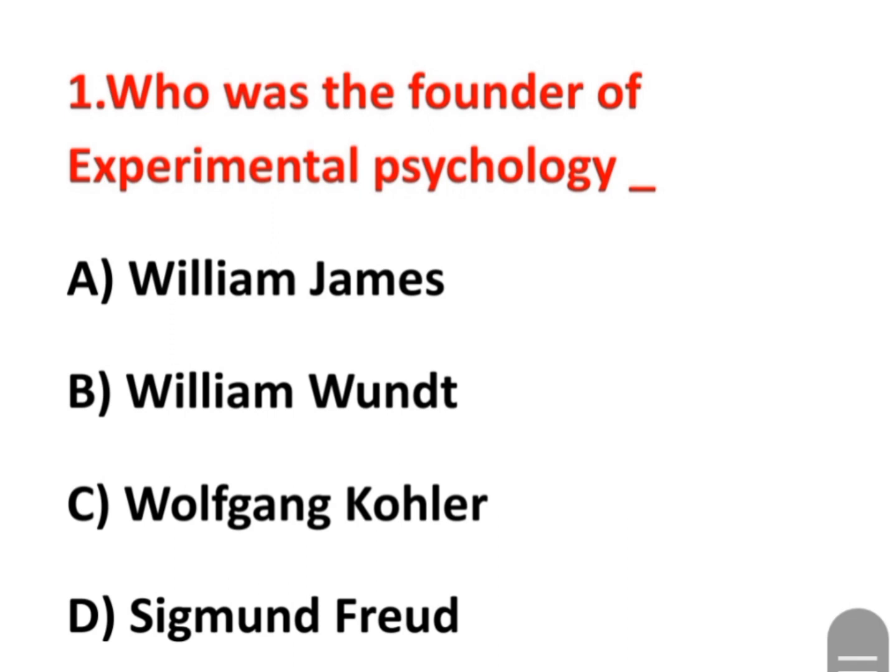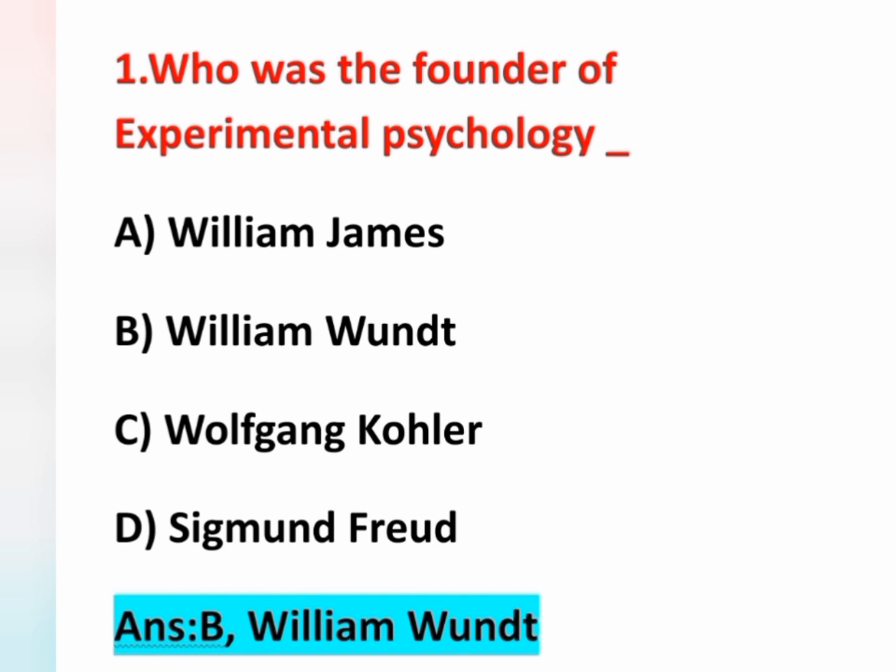The first question is from psychology: Who was the founder of experimental psychology? The options are: option A William James, option B William Wundt, option C Wolfgang Köhler, option D Sigmund Freud.